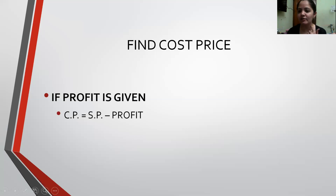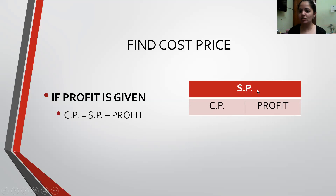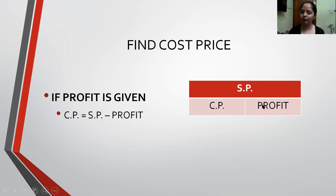The price at which I have sold the goods — if I subtract the Profit I have earned, I will get the Cost Price. We can show this in a model: the higher price is always written on top. Since it is Profit, Selling Price is more, so Selling Price goes on top, then Cost Price, then Profit. To find the Cost Price, I subtract: Selling Price minus Profit.